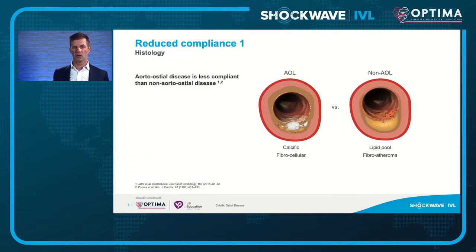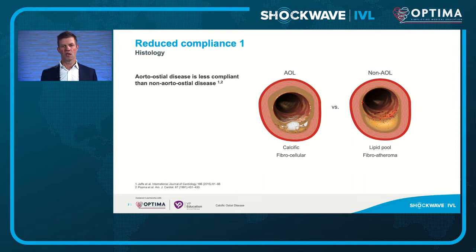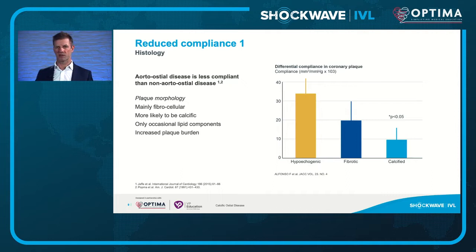Histology shows more calcific disease at the aorto-ostium compared to the more lipid-pool-rich non-aorto-osteal lesions. This fibrocellular matrix, increased calcification, and minimal lipid pools leads to a dramatic reduction in compliance — the more fibrosis and calcification, the less compliance there is. Add in a fibromuscular bundle and you really start to struggle with getting your vessels to dilate.